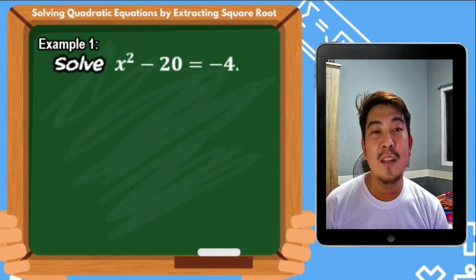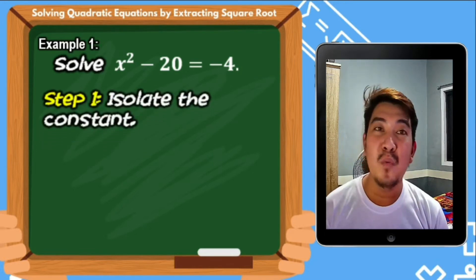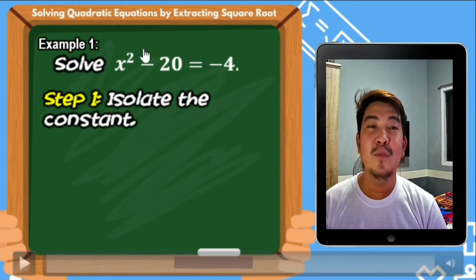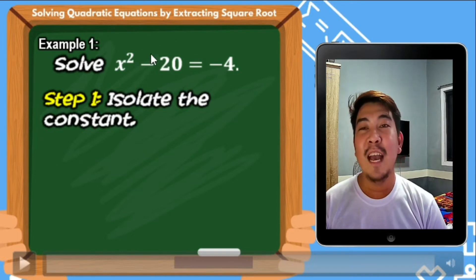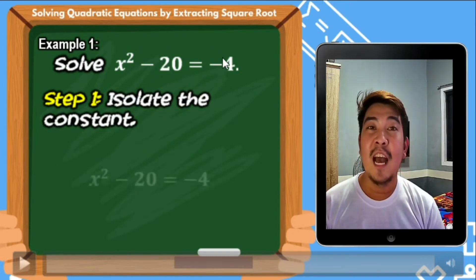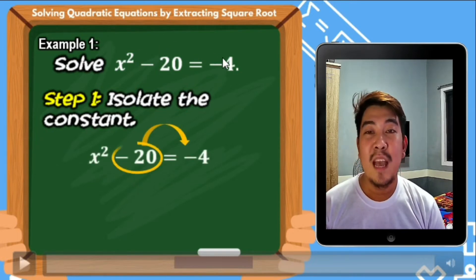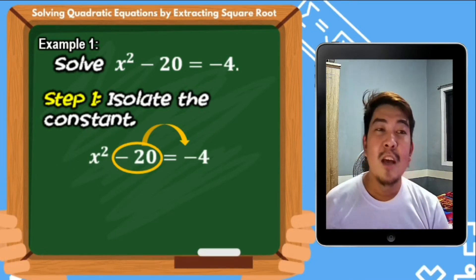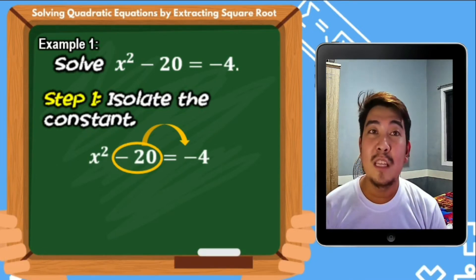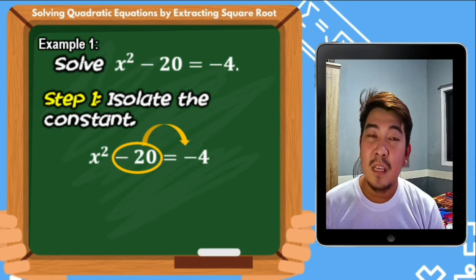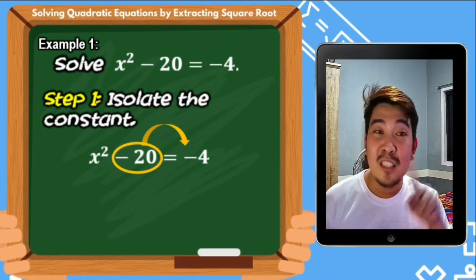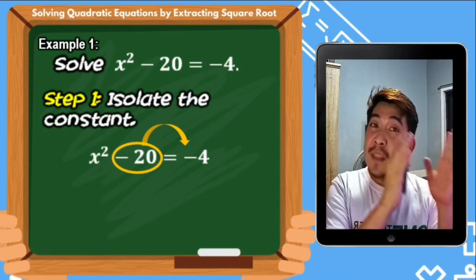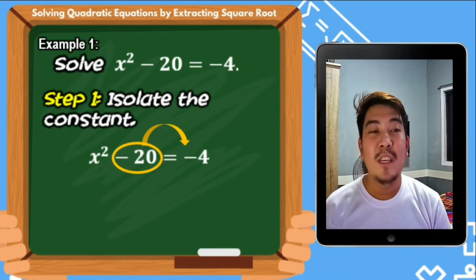Step number 1: isolate the constant. The constant here is negative 20, and it needs to be on the other side of the equation. So we need to transfer negative 20 to the other side. To do that, we use the addition property — what we call transposing — we transpose negative 20 to the other side of the equation.